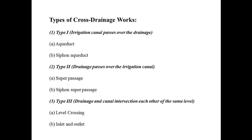In type two, the cross drainage works are constructed in the case when the drainage passes over the irrigation canal. In the first type, the irrigation canal passes over the drainage, and in the second type, the natural drainages pass over the irrigation canal. For type two, the structures constructed are: number A is the super passage and number B is the siphon super passage. These two structures are constructed when natural drainages pass over the irrigation canal.